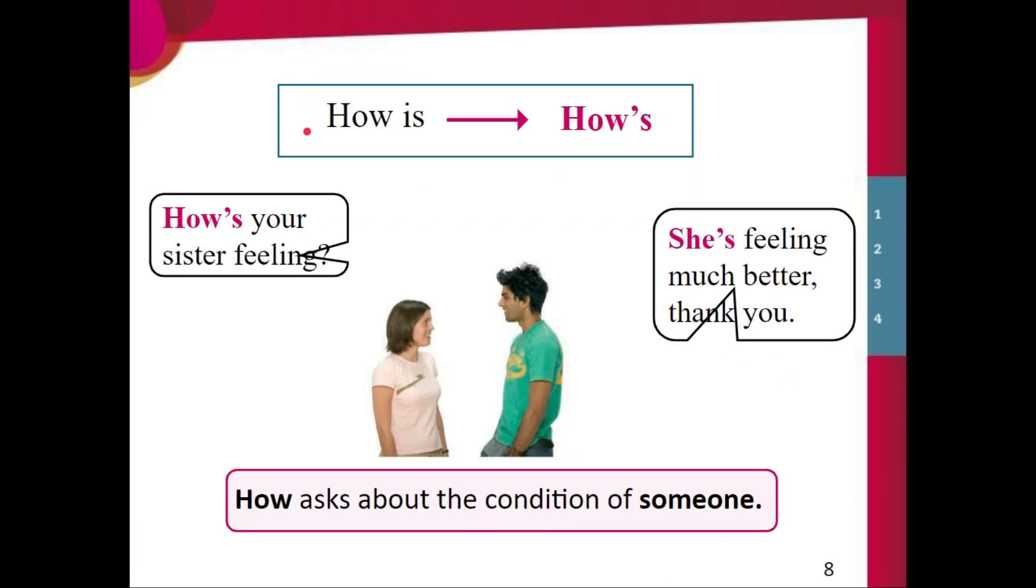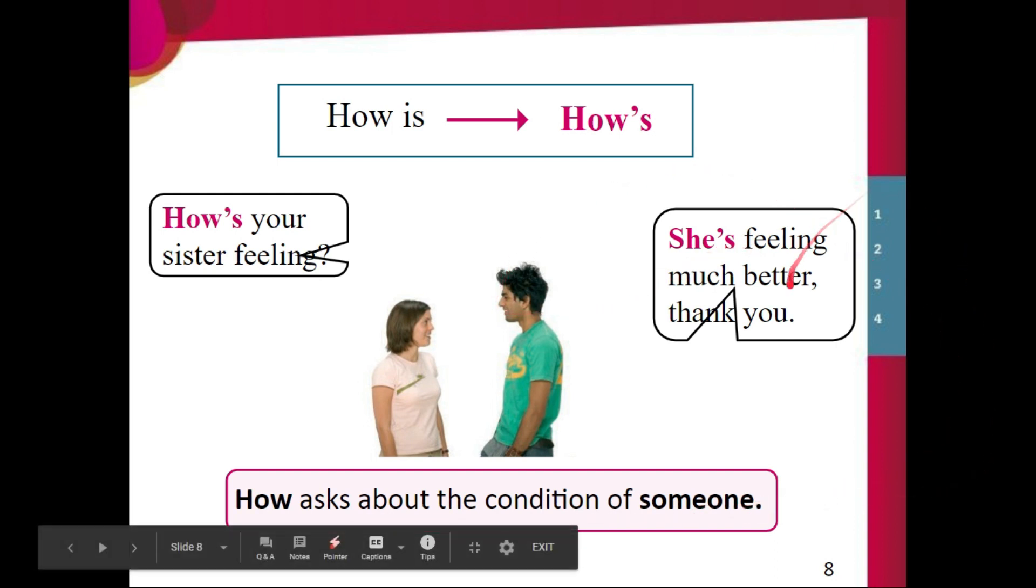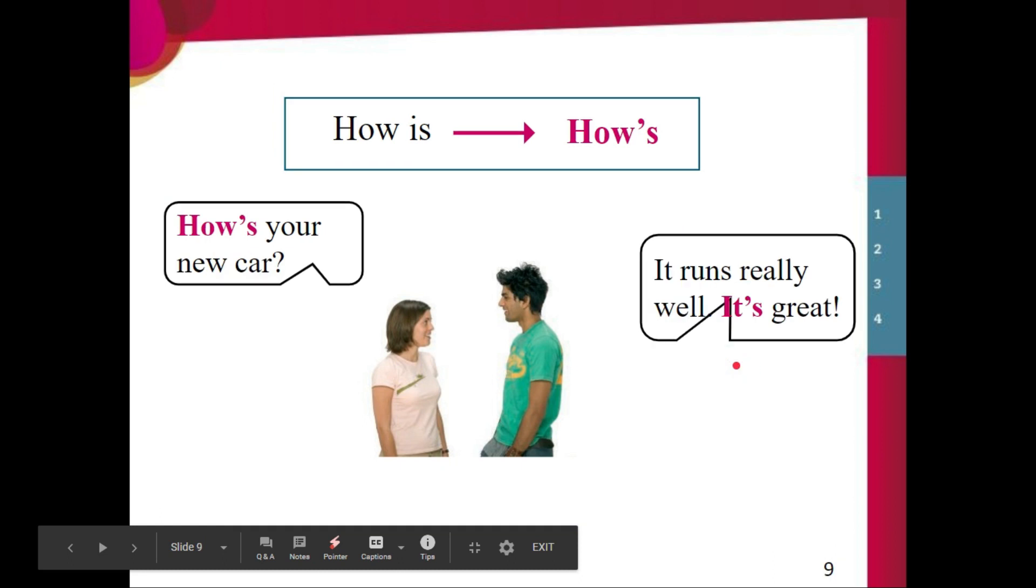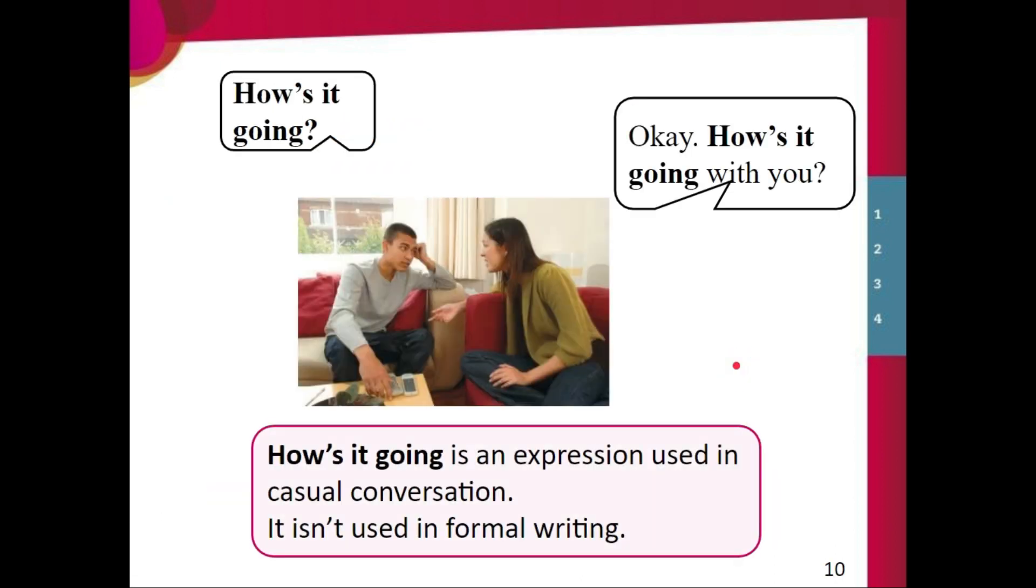Let's continue with the contractions. How is becomes house. For example, how's your sister feeling. She's feeling much better. Thank you. How asks about the condition of someone. How's it going or how is it going is an expression used in casual conversation. It isn't used in formal writing. How's it going. OK, how's it going with you.